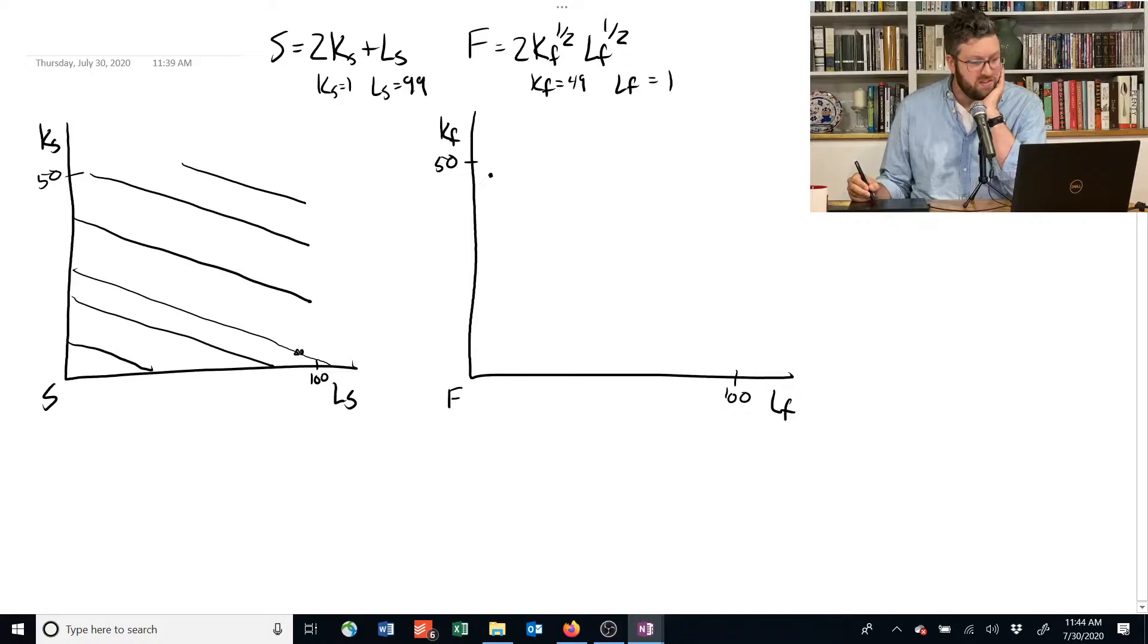What's this isoquant equal to that this allocation is on? We can plug these values in. If we're using one unit of capital and 99 units of labor, this is the isoquant corresponding to 99 units of shelter.